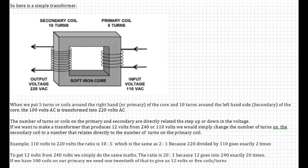The ratio is 10 to 5, which is the same as 2 to 1, because 220 divided by 110 goes exactly two times. So to get 12 volts from 240 volts we simply do the same maths. The ratio is 20 to 1 because 12 goes into 240 exactly 20 times. If we have a hundred coils on our primary we need to have one twentieth of that on our secondary, or five coils or turns. Now transformers actually have hundreds or sometimes thousands of turns on both the primary and the secondary, but the principle of the ratios remains the same. Once you know the principle, you know how it works.